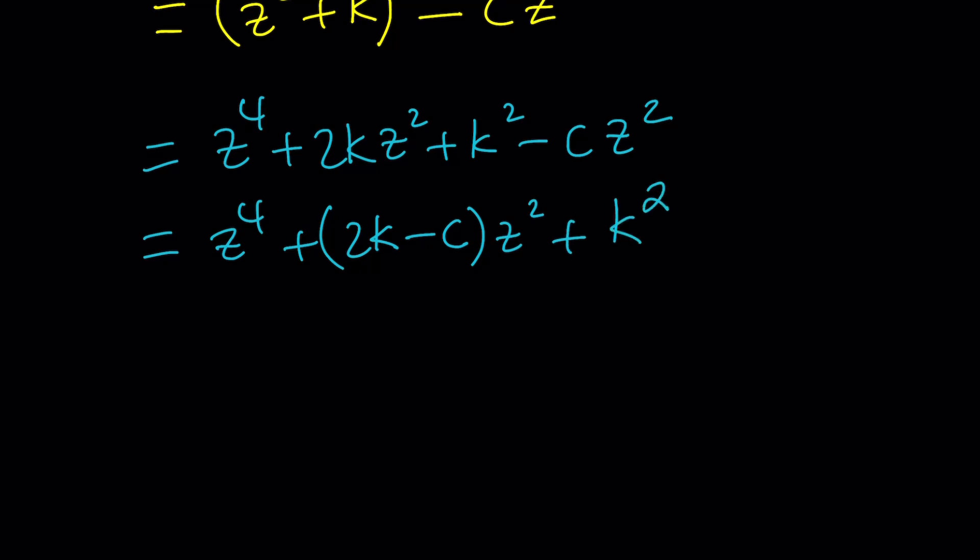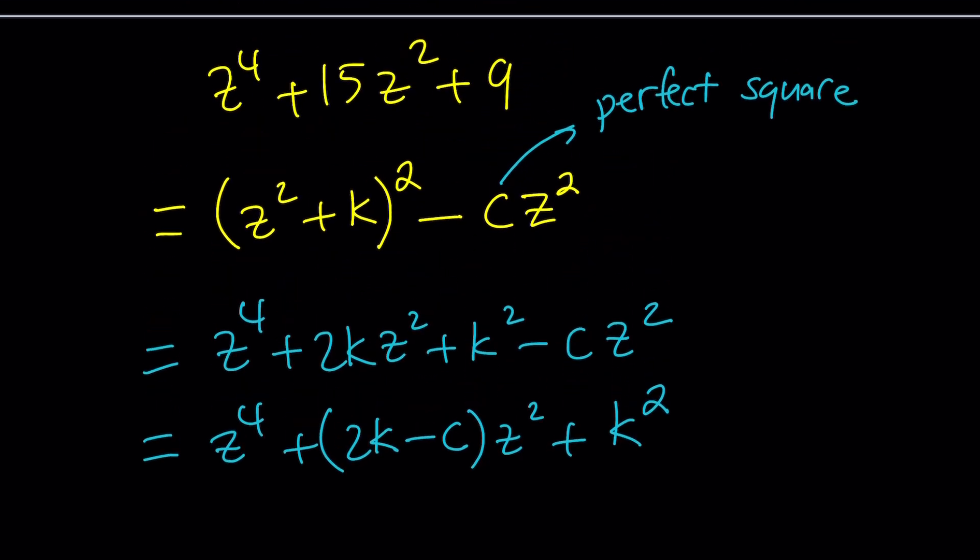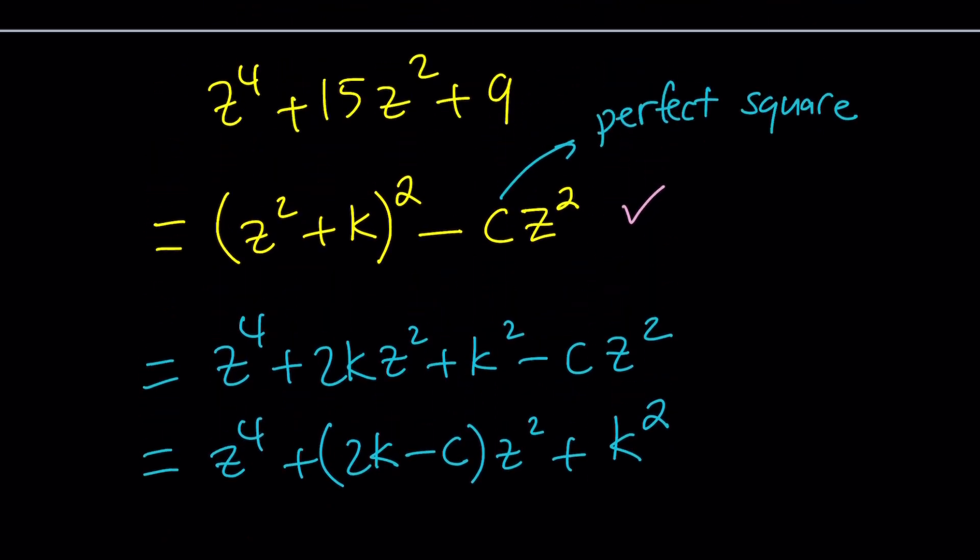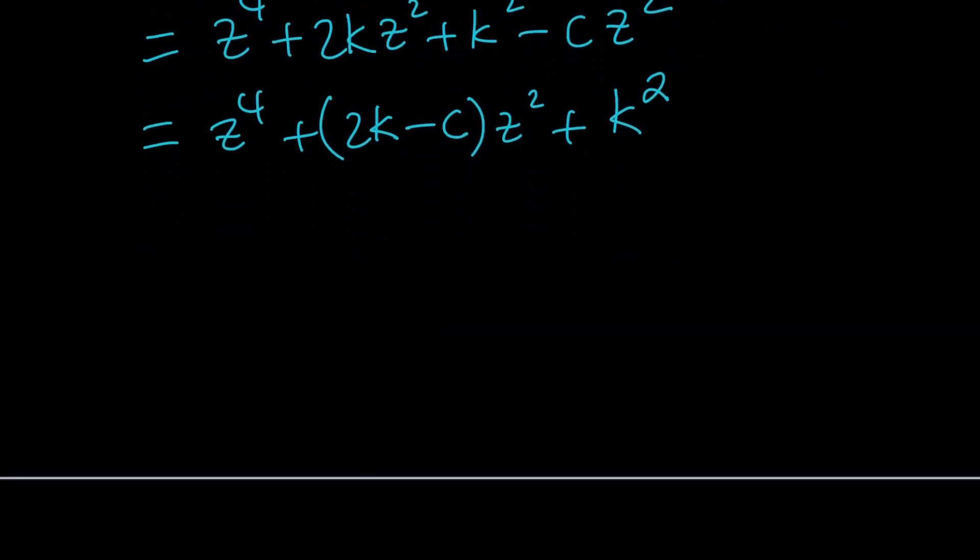Now here's what I want. I want this to be factorable. And we actually kind of made it factorable by writing it as a difference of two squares, at least for now. Okay. So now we're going to set it equal to our original expression, which is z to the fourth plus 15 z squared plus 9.